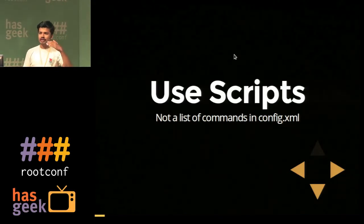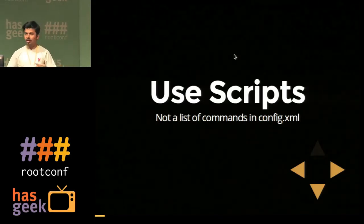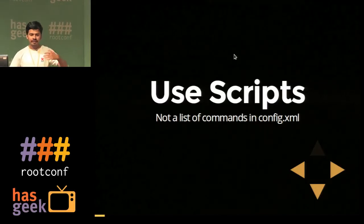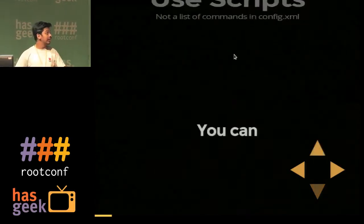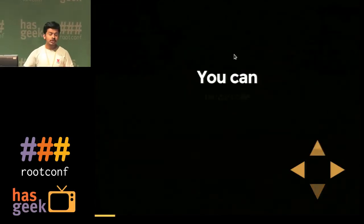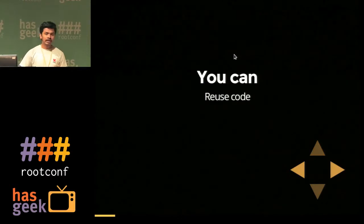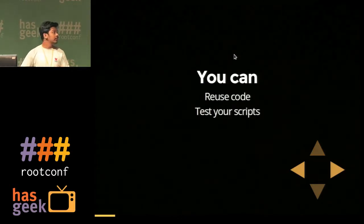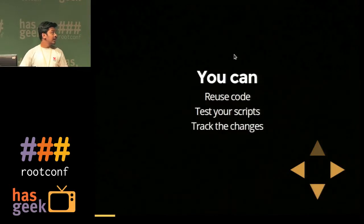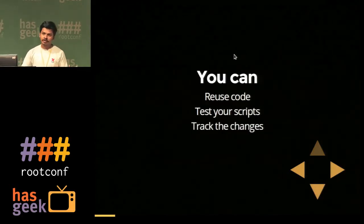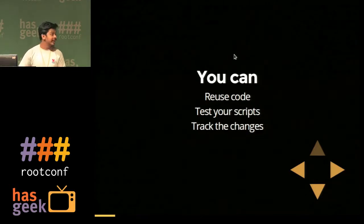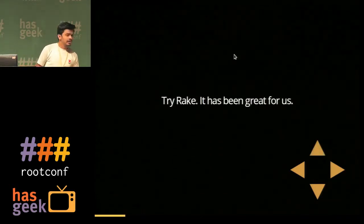In Jenkins, a lot of people write five, seven, eight or even more commands inline. When you use scripts, you can reuse the code, test them, write tests for them, and track the changes — so if somebody breaks it, you can find out who did it.